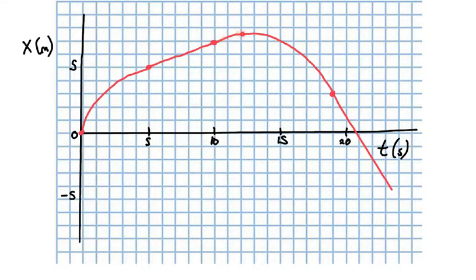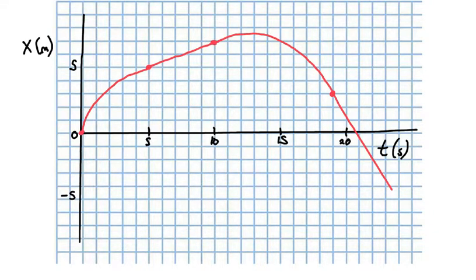We go a little bit beyond that, not quite to 8 meters. Then we start to go back — 7, then 6, then back to 5, and all the way back to the 0 meter position, and even onto the negative side. So we obviously have the position information, and we also have some velocity information that we can get from this graph.